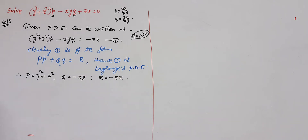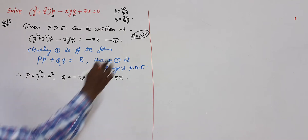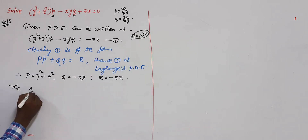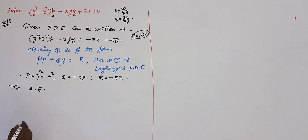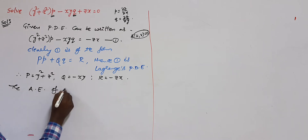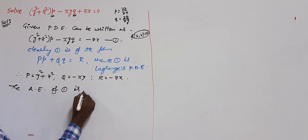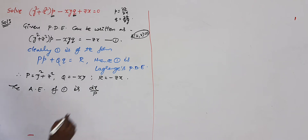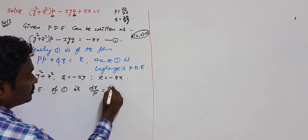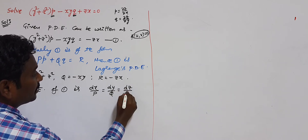First of all, we have to write the auxiliary equations to find u and v. The auxiliary equations — also known as subsidiary equations of Lagrange's PDE — are: dx/P = dy/Q = dz/R. Note: do not write ∂x.